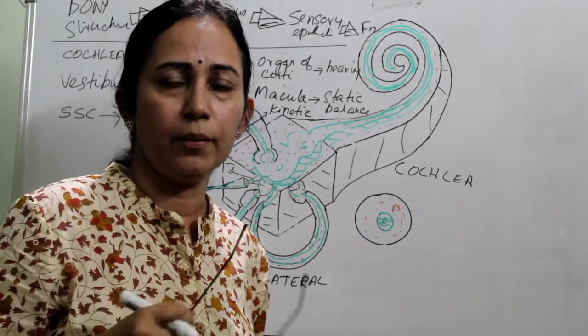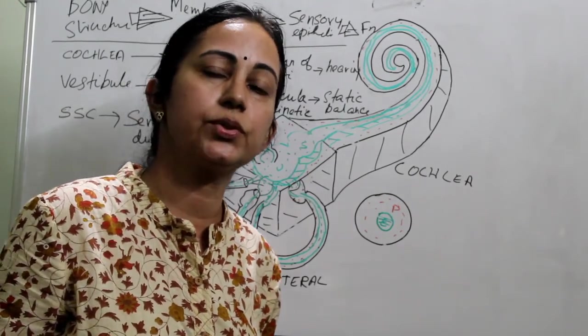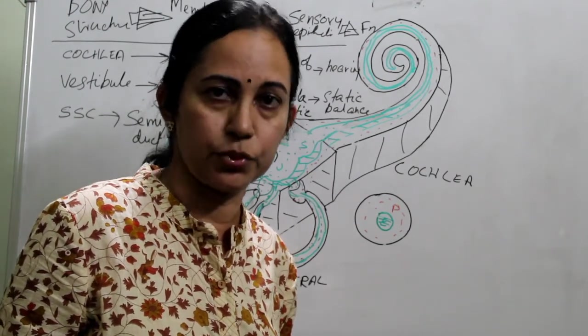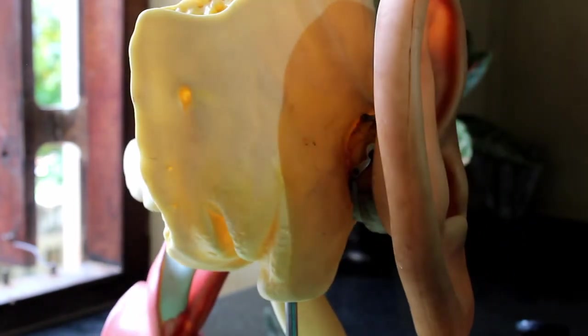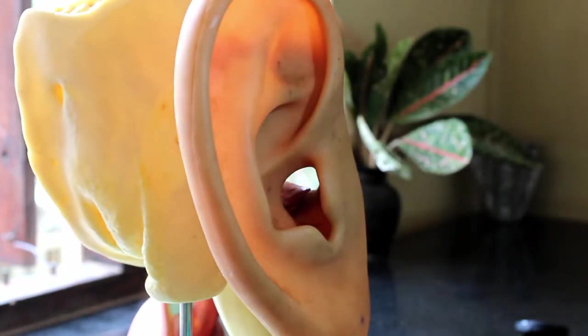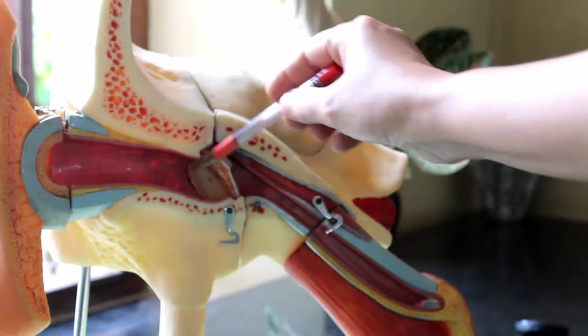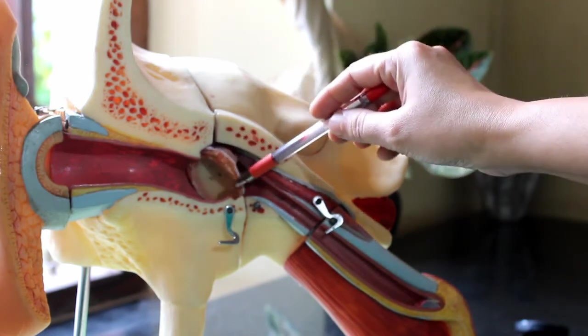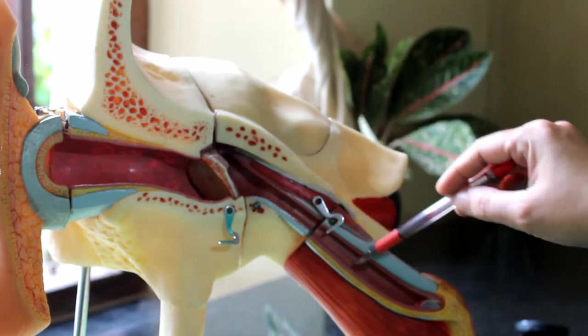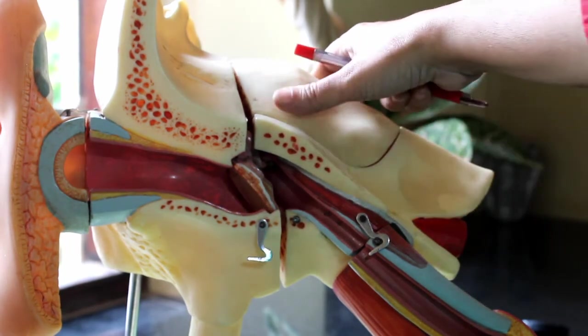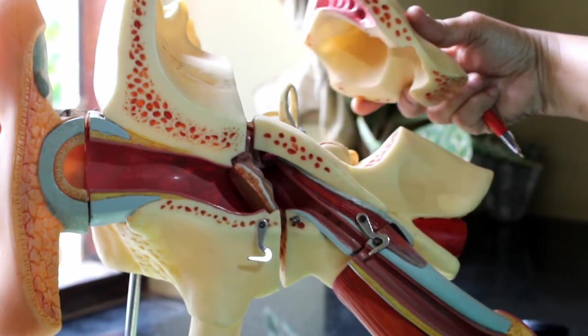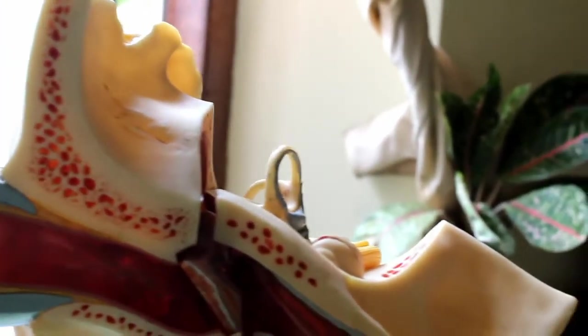For a better concept of the inner ear, I will show you a model from our anatomy museum. You can see the mastoid process posteriorly on the right side — the mastoid. On turning, you can see the pinna with the external auditory canal and the tympanic membrane. From the anterior wall of the middle ear comes the eustachian tube opening. And above the bony plate comes the tensor tympani tendon going to the middle ear.